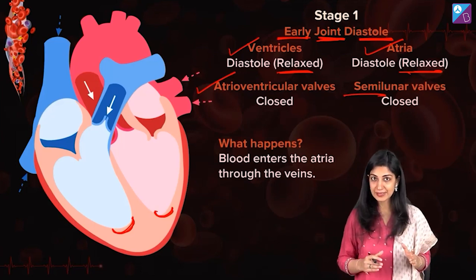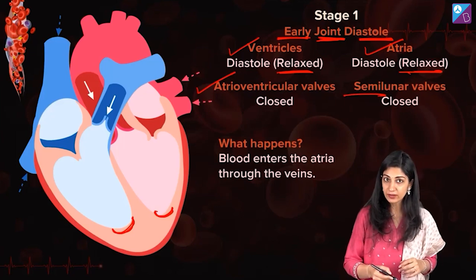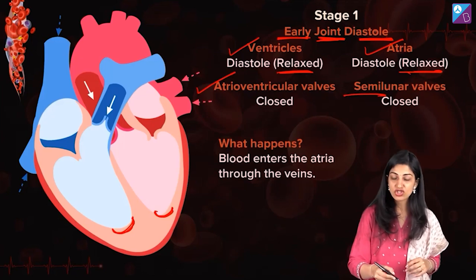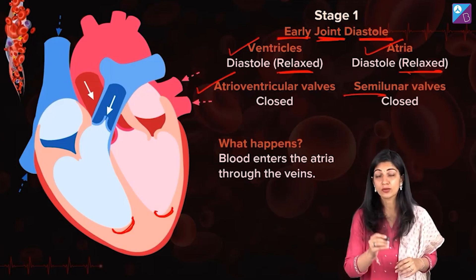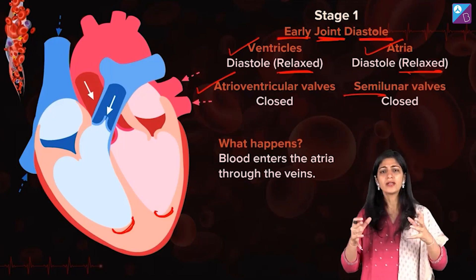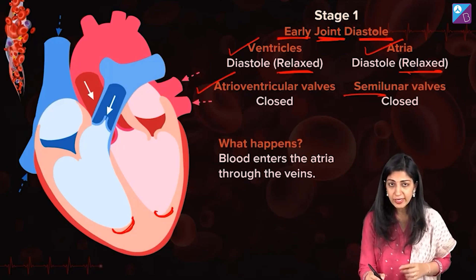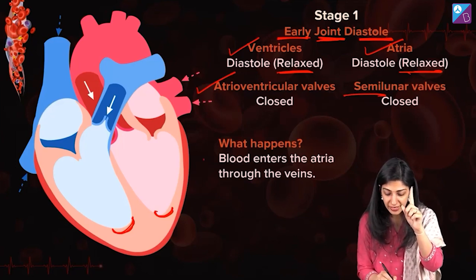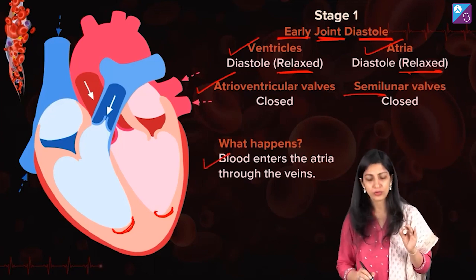What happens at this relaxed state? There are arteries and veins connected. There is deoxygenated blood coming from the body tissues and oxygenated blood coming to the left side of the heart from the lungs. So the blood fills the atria. In early joint diastole, the blood enters the atria.